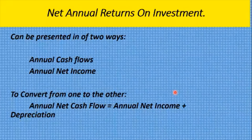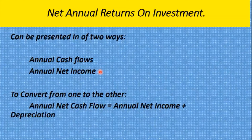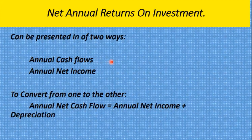The second item is net annual returns on investment, which can be presented in two ways: annual cash flows or annual net income. Annual cash flows means the actual cash that flows into the business, while annual net income is taken from the income statement. When using appraisal methods you must use cash flows, so you need to be able to convert one to the other. Annual cash flow equals annual net income plus depreciation.